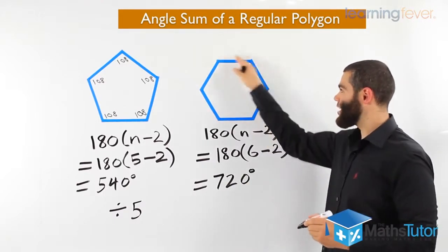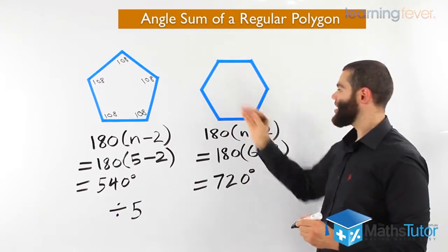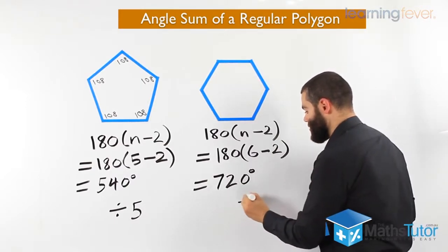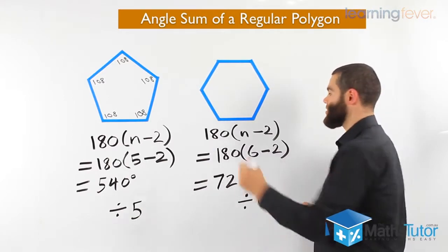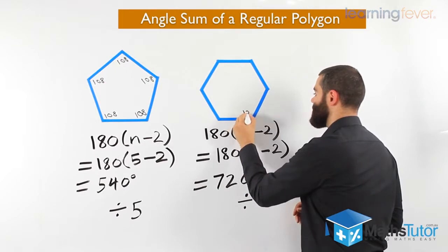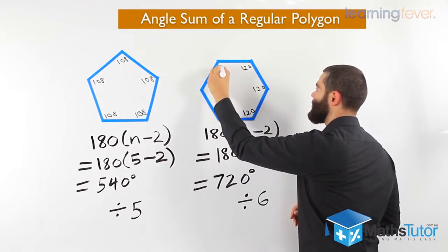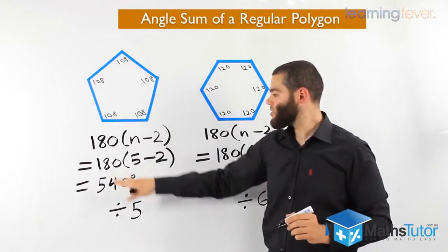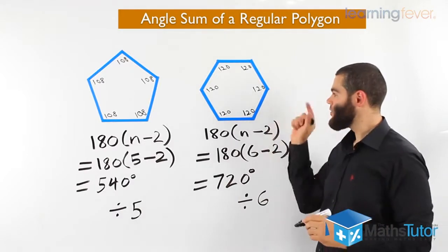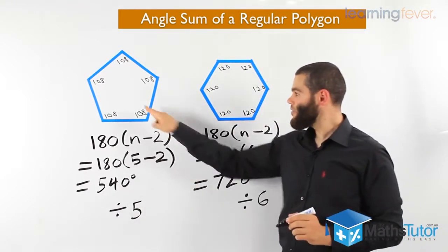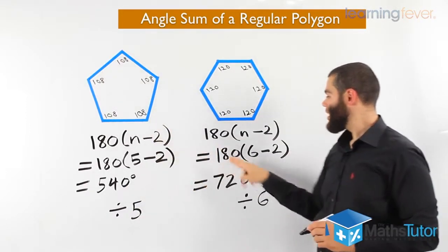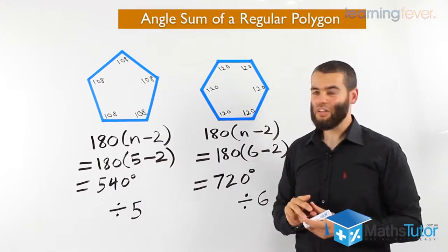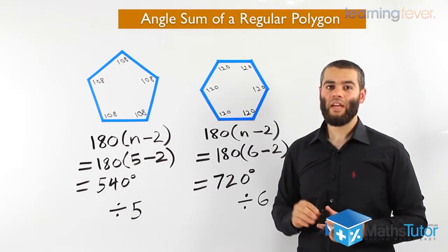For the hexagon, the same approach: we know 720 is the angle sum total, but there are 6 angles, so 720 divided by 6 equals 120 degrees each. So the angle sum is 540 for the pentagon — divide by 5 to get 108 each — and 720 for the hexagon — divide by 6 to get 120 each. This works for all polygons. Make sure you memorize this formula — it's going to be very handy throughout high school.